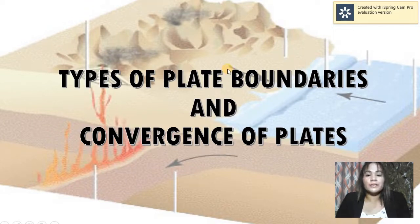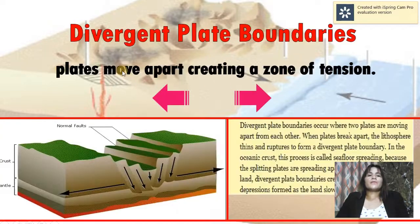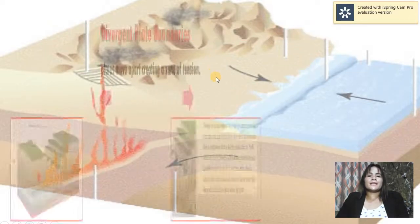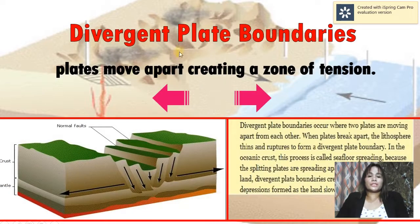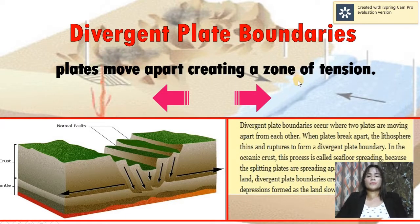There are three different types of plate boundaries. The first one, we have the divergent plate boundaries. In this type of plate boundaries, plates move apart, creating a zone of tension at the middle.